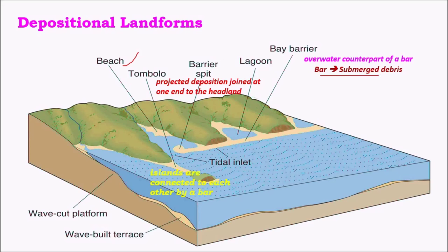A bar is a part of submerged debris found below the overlying debris. This overlying debris is called a bay barrier, which may sometimes enclose a water body called a lagoon, mainly consisting of saline water — Chilika Lake in India is one example, separated from the sea by a small barrier. A barrier spit is debris accumulated and connected to one side of the beach, while the other side remains open for water to enter.